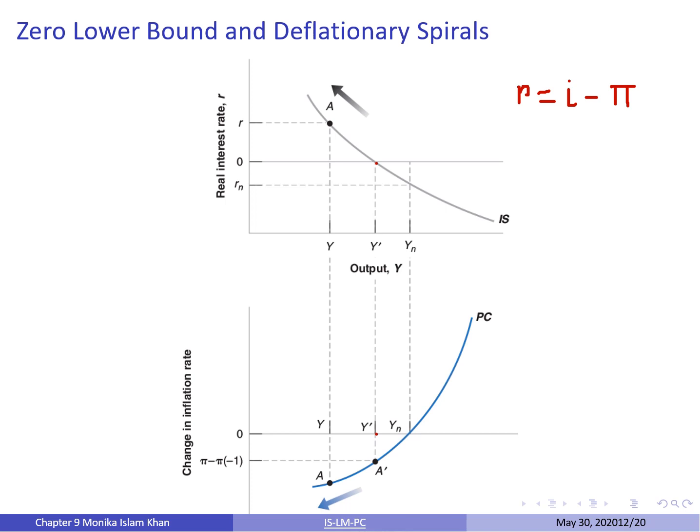If inflation was equal to zero to start with, it now becomes negative — zero inflation turns into deflation. This implies that even if the nominal rate remains at zero, the real policy rate increases, leading to even lower demand and lower output. Deflation and low output feed on each other: lower output leads to more deflation, and more deflation leads to an even higher real interest rate and lower output. As shown by the arrows in the graphs, instead of converging to the medium run equilibrium, the economy moves away from it, with output steadily decreasing and deflation steadily becoming even larger. At this point, there is little the central bank can do.